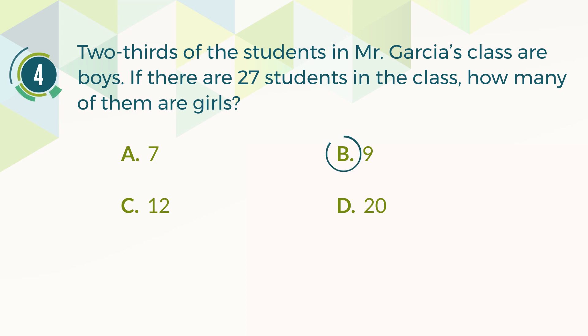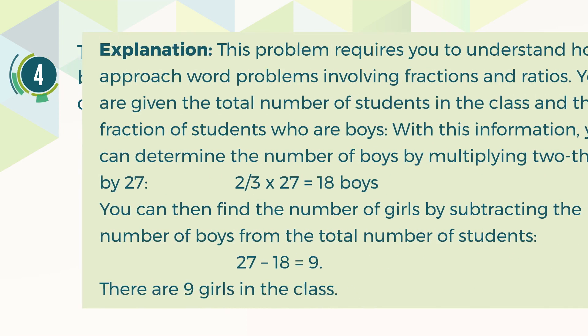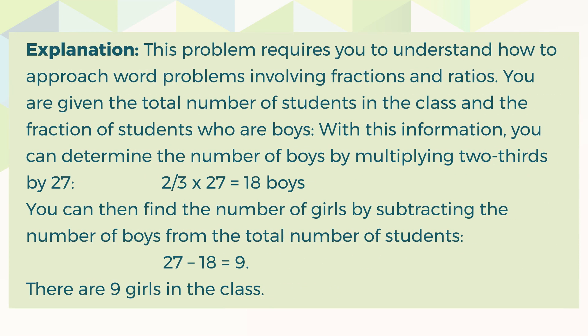The correct answer is B, 9. This problem requires you to understand word problems involving fractions and ratios. You are given the total number of students and the fraction who are boys. Multiply two-thirds by 27 to find 18 boys, then subtract 18 from 27 to get 9 girls.